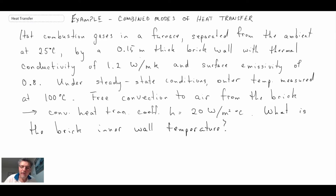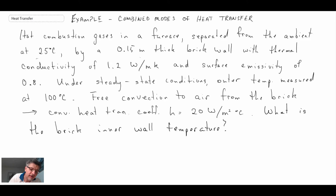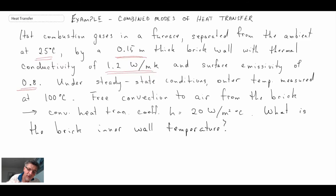So there's our problem — kind of a long statement — but what we have is we have a furnace. Within the furnace are hot combustion gases, and there is a brick wall that forms the wall of the furnace. We're told the ambient air temperature is 25 degrees C. The brick wall is 0.15 meters thick. The thermal conductivity of the brick is 1.2 watts per meter Kelvin, and the surface emissivity of the brick is 0.8.